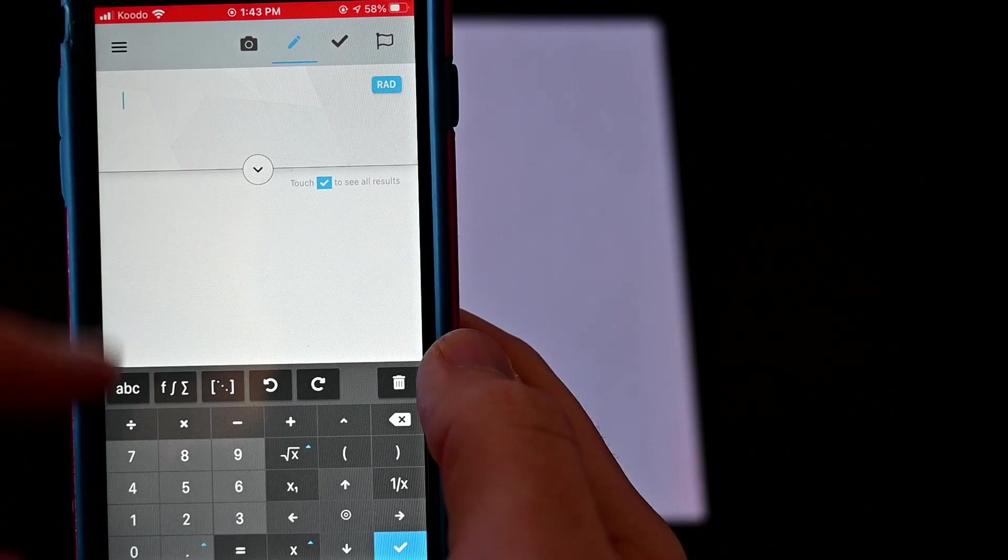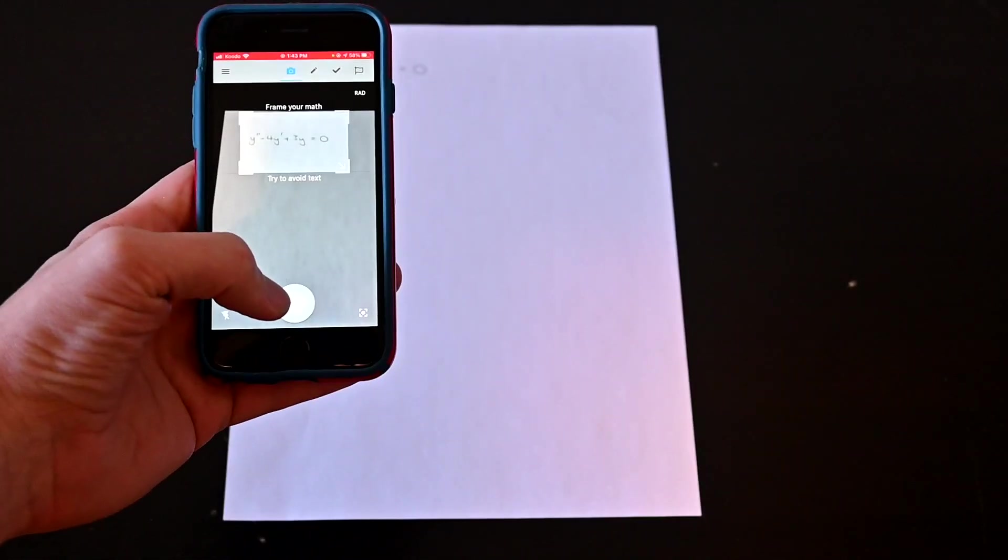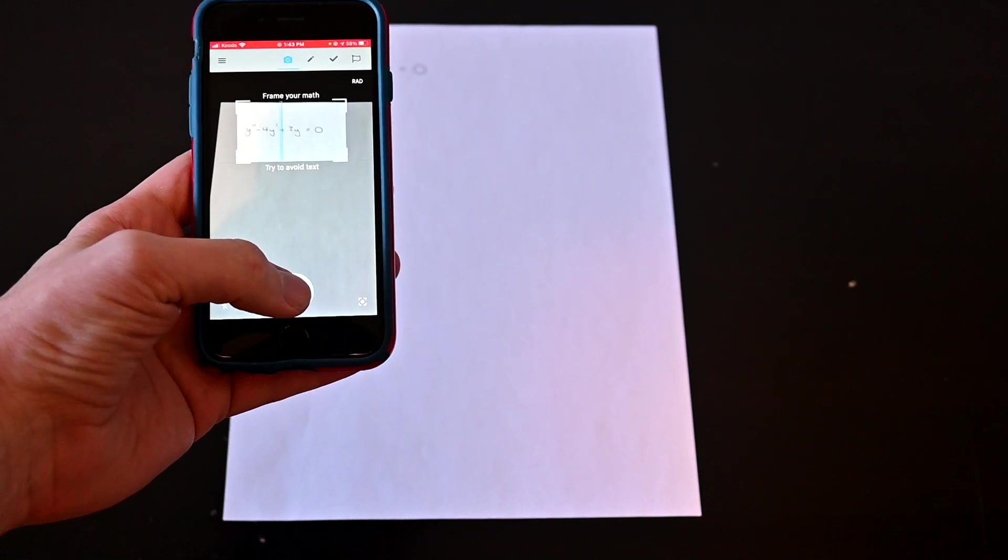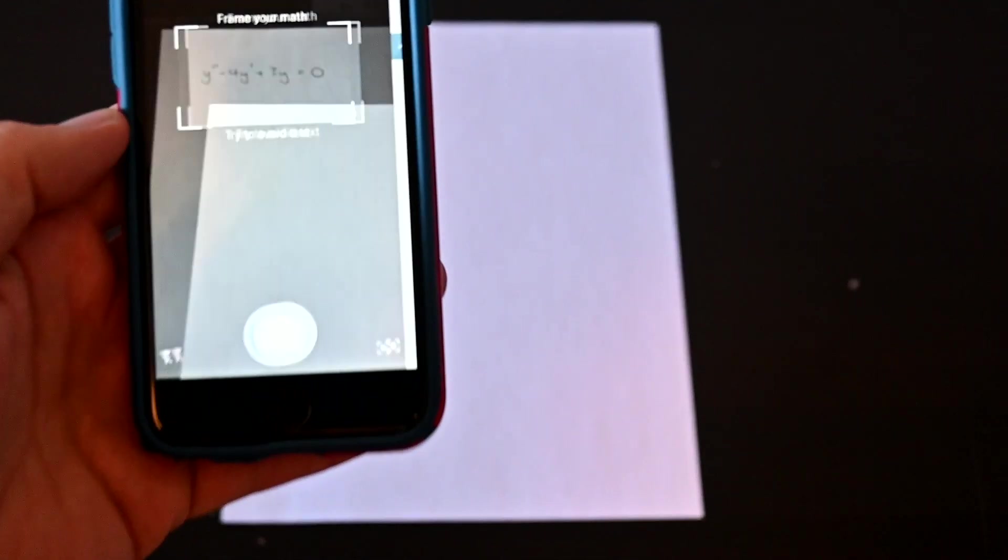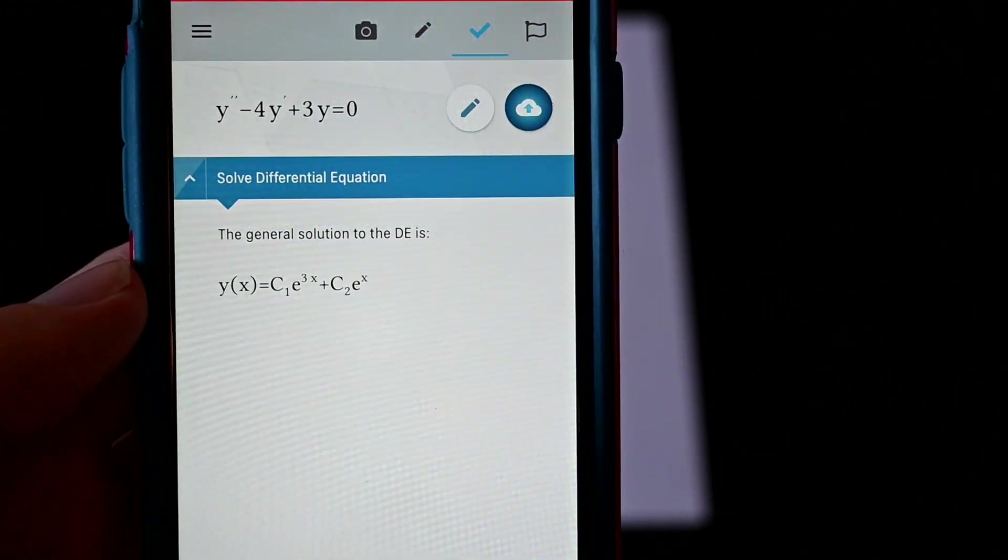Then if I open the app, I can hit the camera button, and I can just take a picture of my equation, and the Maple Calculator will interpret it. And look what it does. It automatically spits out the general solution to this differential equation.